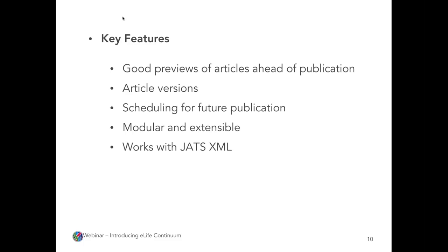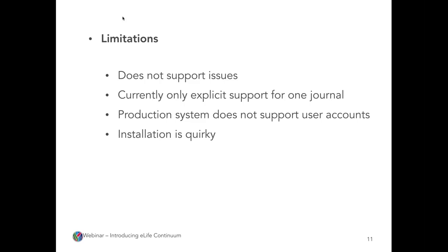One of the key requirements from our production department was the ability to publish an article at a set time in the future, so we've got two-minute scheduling in the system. It's modular and works out of the box with JATS XML. There are some limitations: the system does not support issues — we publish one issue per year, so our system just publishes continuously. The system was built to support only one journal, though you could add a couple of metadata fields to allow multi-journal publishing. The production system does not support user accounts; there's just one admin-level account. Installation at the moment is a little quirky, but it's something we're working on to make it a much easier path for other people in the next week or two.